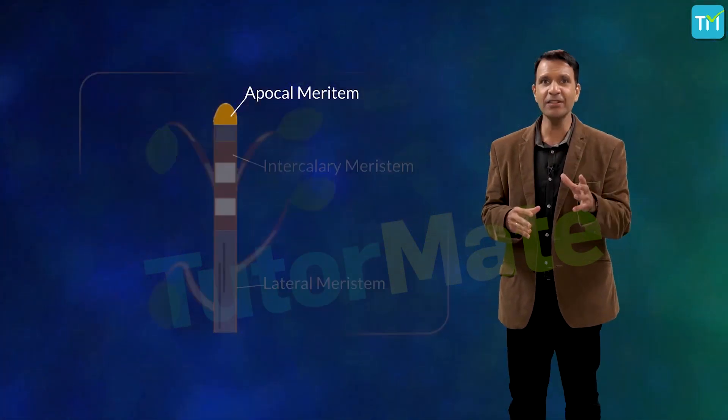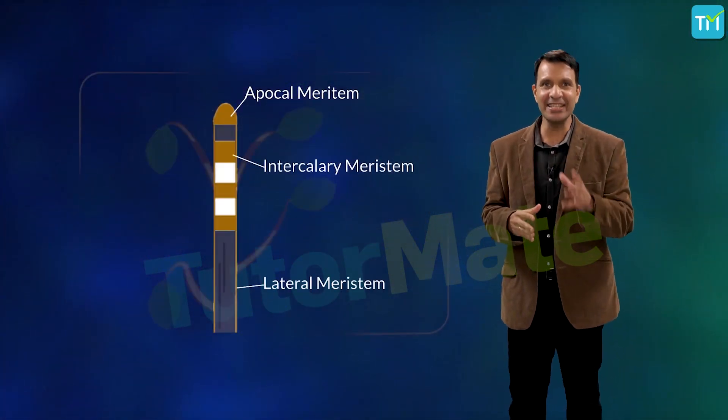Depending on the region where they are present, meristematic tissues are classified into three types: apical, lateral, and intercalary.